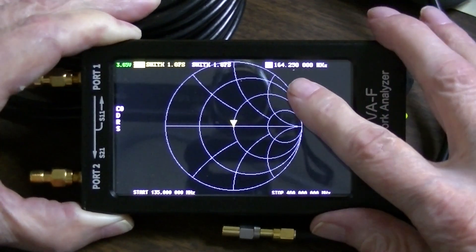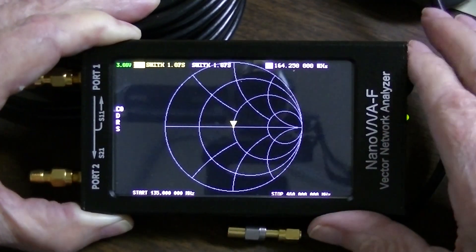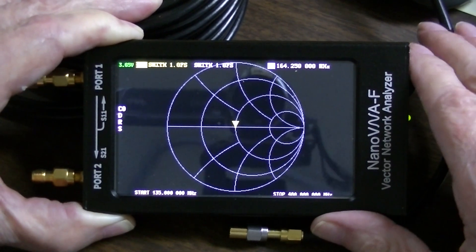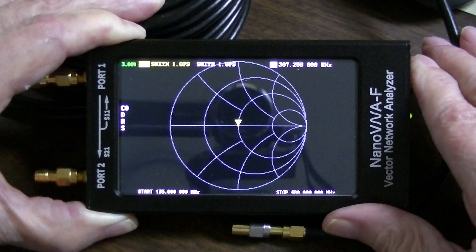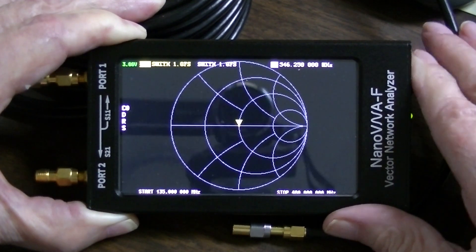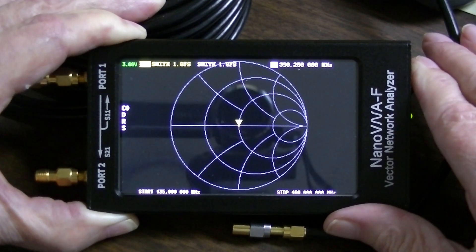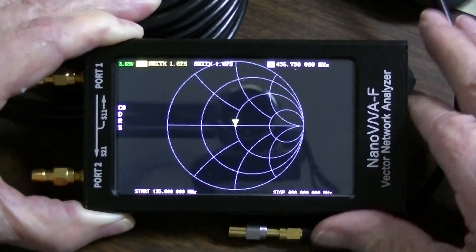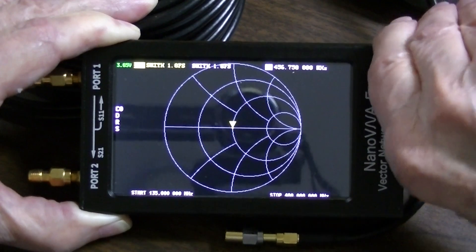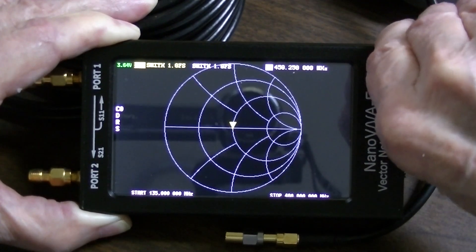I've got the span set from 135 to 460 megahertz. See up here the frequency at the cursor's at, and you'll see that it's sitting at 50 ohms clear through the span of VNA. A little bit of wobbling there at the very end. See that wobbling?